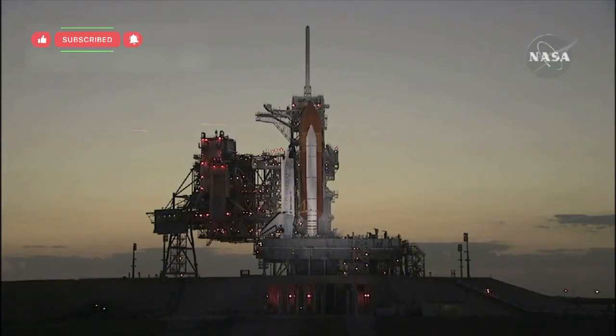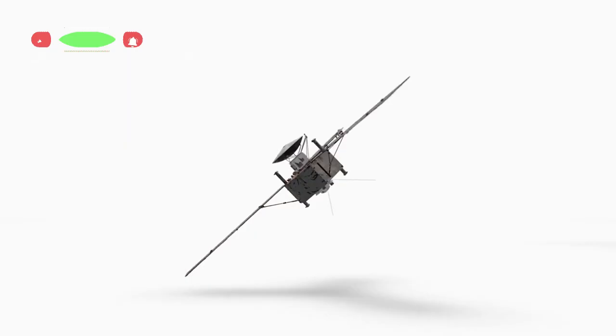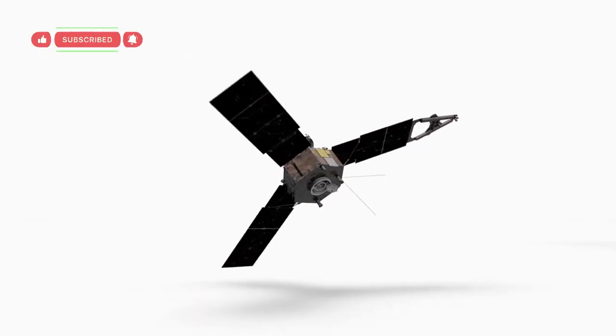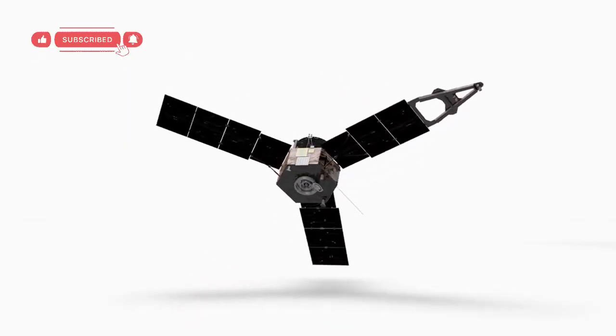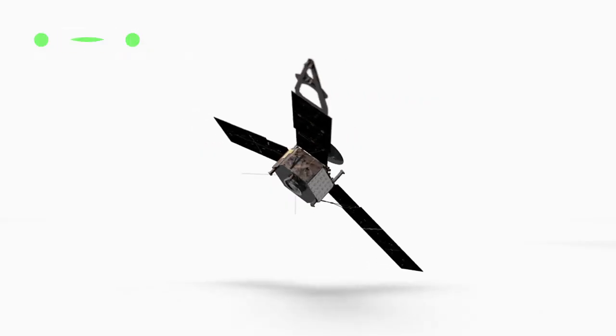On September 5, 1977, NASA launched Voyager 1, beginning one of the most ambitious missions ever attempted. Together with Voyager 2, it was built to explore Jupiter and Saturn, the two giant planets that dominate our solar system.